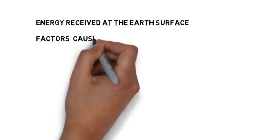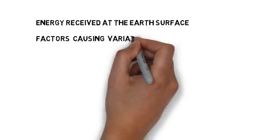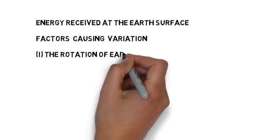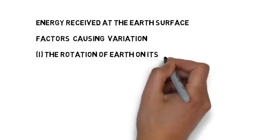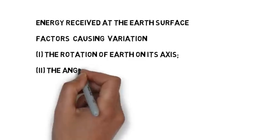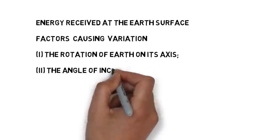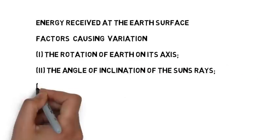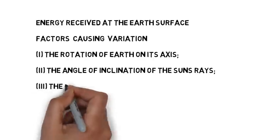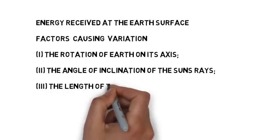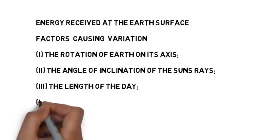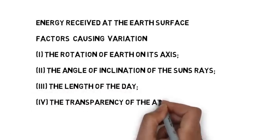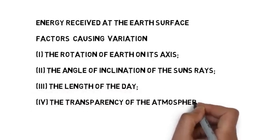Energy received by the earth's surface varies because of the following reasons. First, the rotation of earth on its axis. Second, the angle of inclination of the sun's rays. Third, the length of the day. Fourth, the transparency of the atmosphere. Fifth, the configuration of land in terms of its aspect.